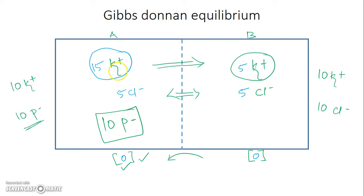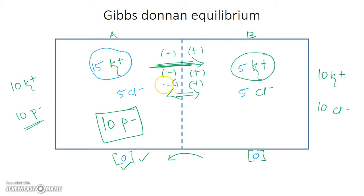If potassium ions move from side A to side B, a positive charge is added to side B and a net negative charge accumulates on side A. But the concentration gradient keeps driving potassium towards side B, so gradually more positive charges accumulate on side B and negative charges on side A. Let us say 3 molecules have moved — now there are 12 potassium on side A and 8 on side B.